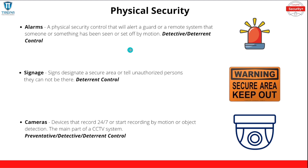Alarms are a physical security control that will alert a guard or remote system that someone or something has been seen or set off by motion. This is going to be a detective and deterrent control. Signage — these are signs that designate a secure area or tell unauthorized persons they cannot be there. That's going to be a deterrent control. Obviously, a sign telling you to keep out can't physically stop you, and it also doesn't detect anything or alert any security personnel.